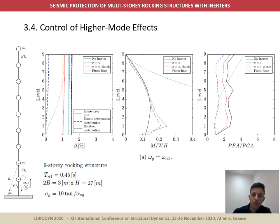Once again, the addition of the clutch significantly improves the lateral drift response, although at the expense of reducing the inertor's efficiency to control higher mode effects. Overall, our results allow us to conclude that inertors can be used to improve the seismic performance of a wide range of rocking structures.